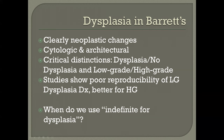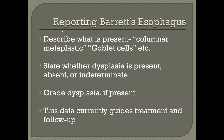We use the term indefinite for dysplasia when we seem to have cytologic or architectural changes but also have a confounding variable — most commonly active inflammation, or occasionally ulceration, size, orientation, fixation, or other obscuring features. In terms of reporting, it's important to describe what is present: columnar mucosa with metaplastic intestinal-type epithelium or goblet cells. We need to state whether or not we have dysplasia — whether it's present or indeterminate — and if present, grade it. This is what every follow-up biopsy for potentially Barrett's esophagus is seeking to answer.